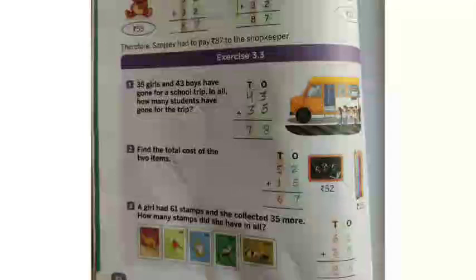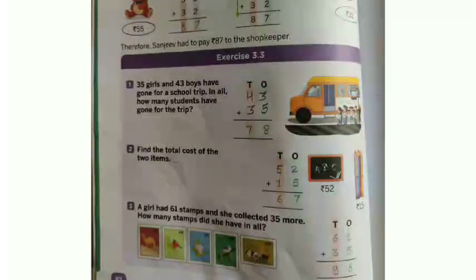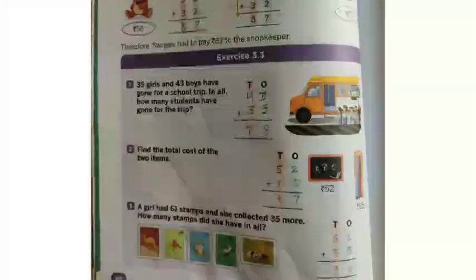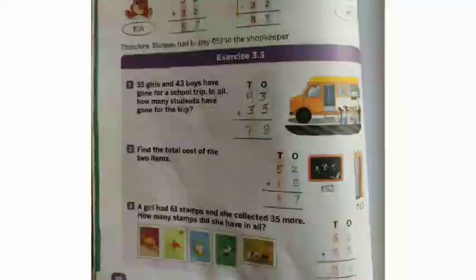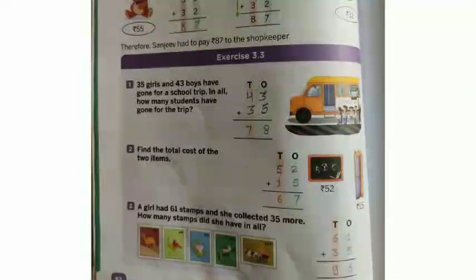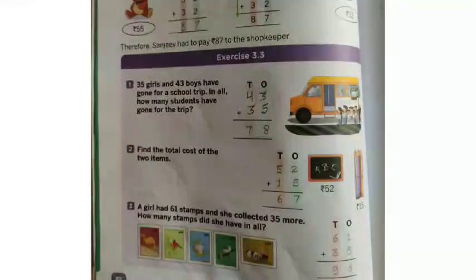Same process for the next word problem. Thirty-five girls and forty-three boys have gone for a school trip. In all, how many students have gone for the trip? Thirty-five girls and forty-three boys. We are asked to count all the students. Total students - how many students in total? 43 and 35, we will add them. A girl had 61 stamps and she collected 35 more. How many stamps did she have in all?